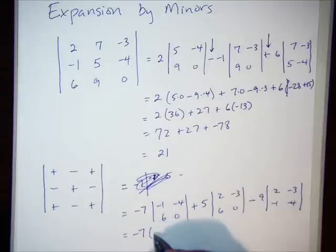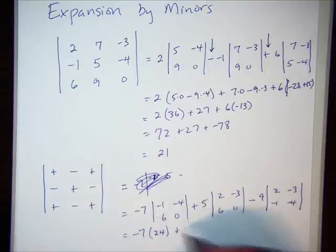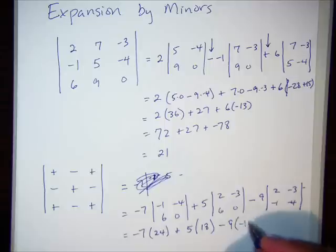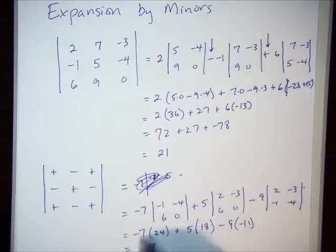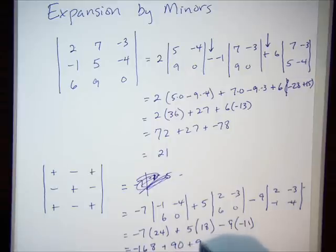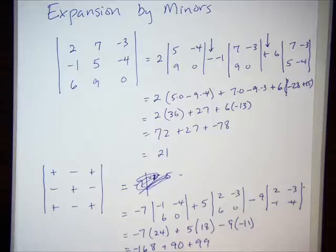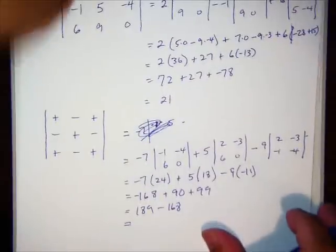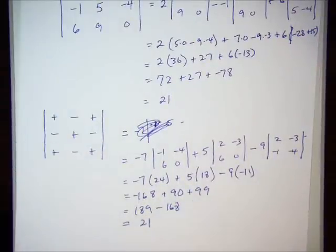Let's see if we get the same answer. This is going to be positive 24. Remember, it's going to be 0 minus a negative 24. This is going to be plus 18. This is going to be negative 8 minus 3, so that's negative 11. 7 times 4, 28, 2, 14. Negative 168. 9 times 4, 90, plus 99. So that's 189 minus 168 and it's 21. We got the same answer expanding on a different set of minors.